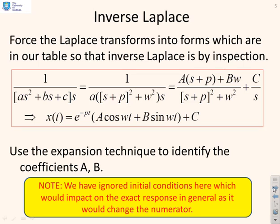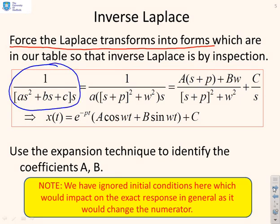The technique for inverse Laplace is to force the transforms into the forms in our table — the two forms we just described. We take our overall Laplace transform, 1 / [s(as² + bs + c)], and notice that the denominator has complex poles. So we write the quadratic as (s+p)² + ω², recognizing it has complex roots.